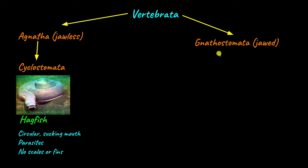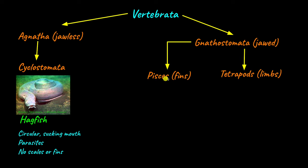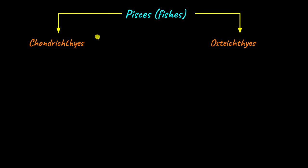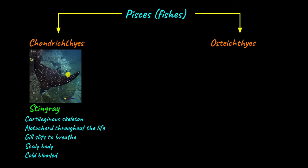Gnathostomata is classified into two main categories: Pisces, which are animals that bear fins, and Tetrapods, which are animals that have limbs. Pisces are exclusively aquatic organisms, while Tetrapods may be aquatic or terrestrial, meaning they can live on land. There are two classes of Pisces: Chondrichthyes and Osteichthyes. Chondrichthyes, such as sharks and stingrays, have a skeleton made up of cartilage, which is a type of soft tissue.